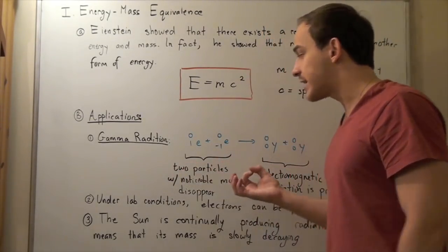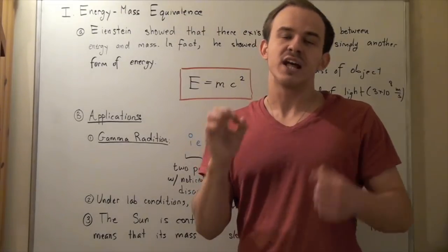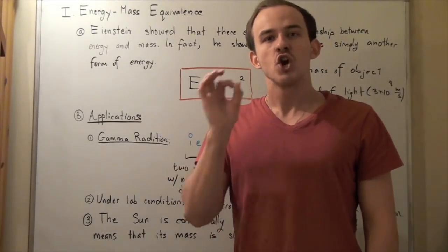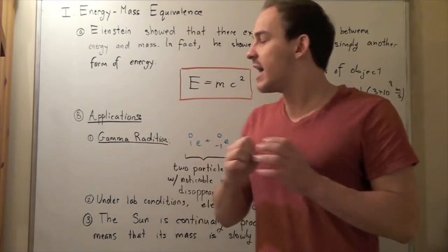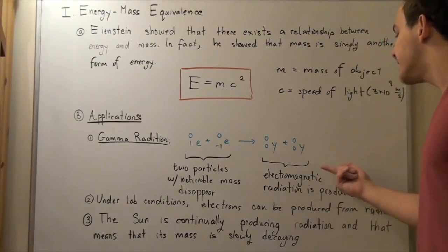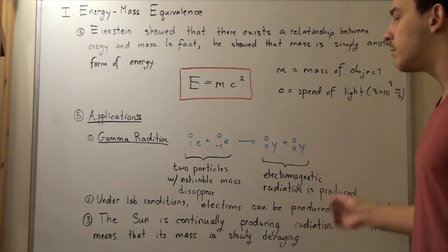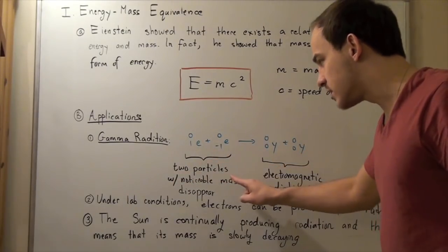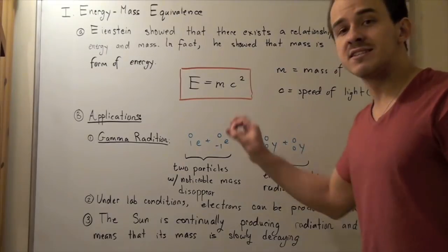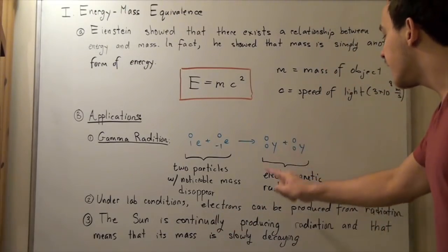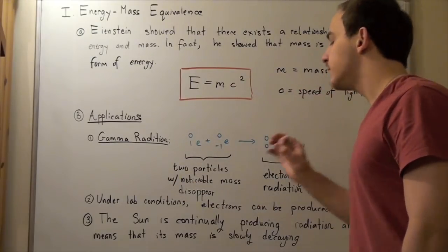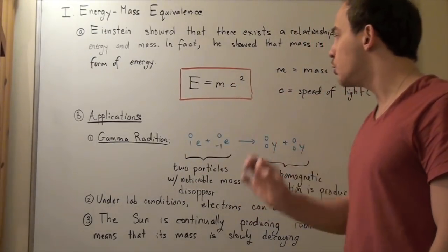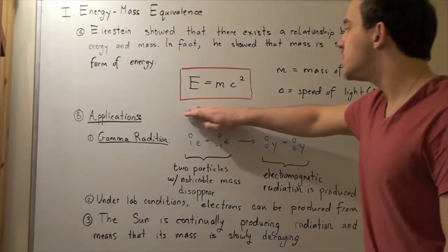And that means that this is, in fact, true, because two objects with some mass combine, and their mass disappears, and they release electromagnetic radiation in the form of light. Two particles with noticeable mass disappear, producing electromagnetic radiation. And the amount of energy in the form of electromagnetic radiation produced can be found using this formula.